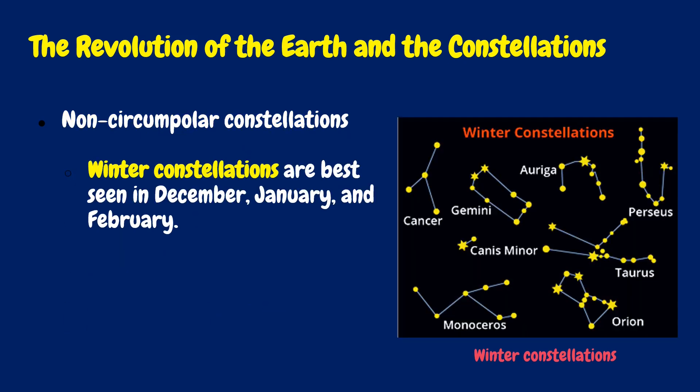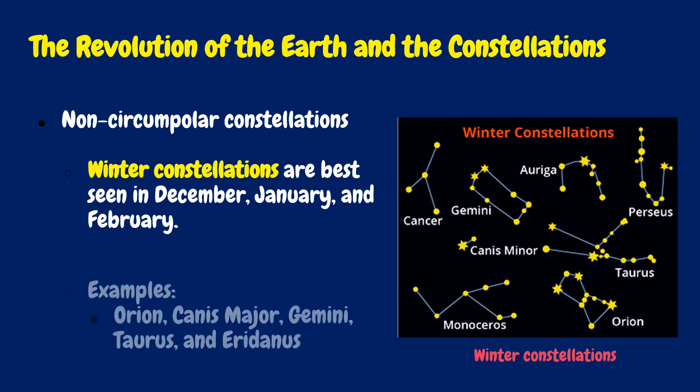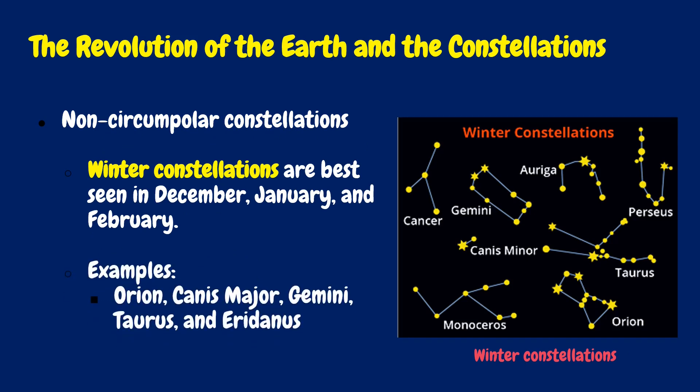Winter constellations are best seen in December, January, and February. Examples are Orion, Canis Major, Gemini, Taurus, and Eridanus.